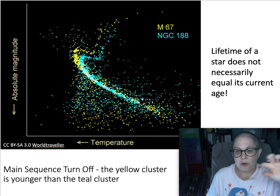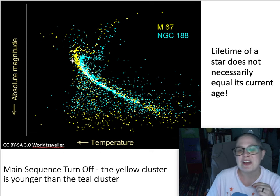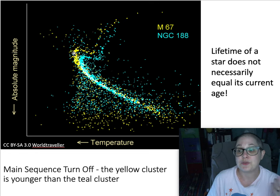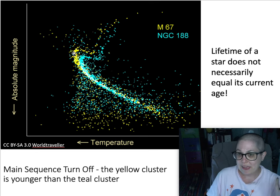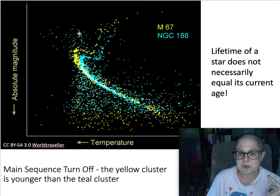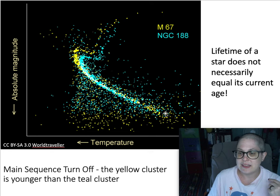It peels off or turns off at a certain point. Where it does so means the star right above this just died, and the star on the end is about to die. That gives us a sense of the cluster's age, because the cluster has big stars and little stars. The big stars die first, so they're the first ones to disappear from this plot. The really less luminous, smaller ones are going to stick around a lot longer.